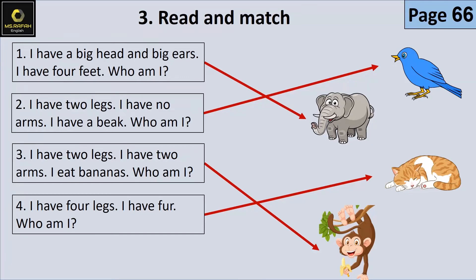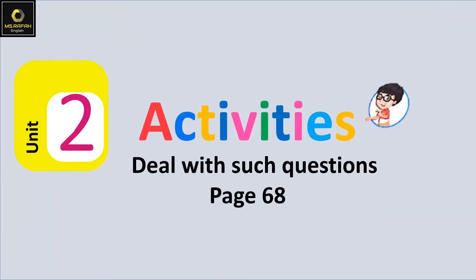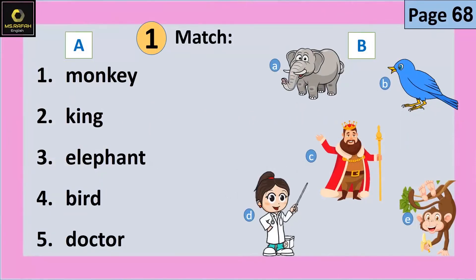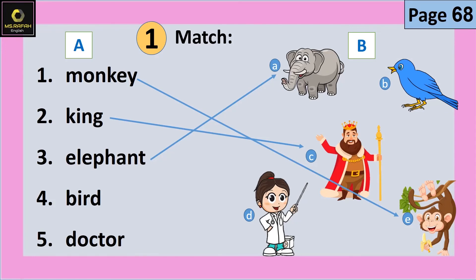Let's move on to the activities — الأنشطة. Page 68. Question number one: Match — سل. We connect the word to the picture. Monkey. King. Elephant. Bird. Doctor.